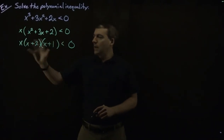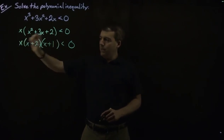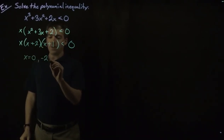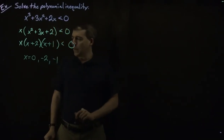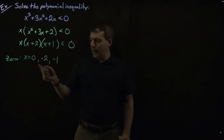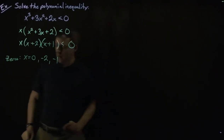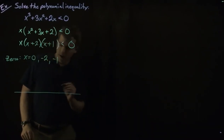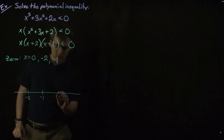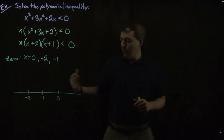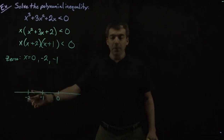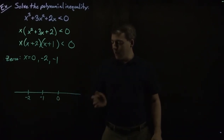Now we'll find the zeros of this polynomial function. We've got x equals 0, negative 2, and negative 1. We set up a number line with these three values: negative 2 on the left, then negative 1, then 0. This splits the real line into four intervals: negative infinity to negative 2, negative 2 to negative 1, negative 1 to 0, and 0 to infinity.